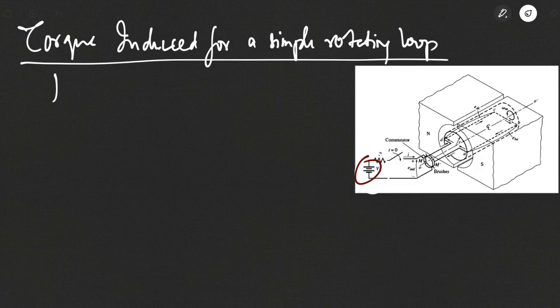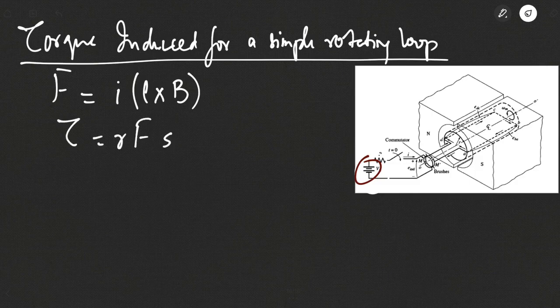We know that the force applied on a conductor when placed in a magnetic field and carrying current is given by F equal to IL cross B, and the torque is given by RF sine θ, where θ is the angle between R and F. The torque will be essentially zero whenever the loop is beyond the pole edge.